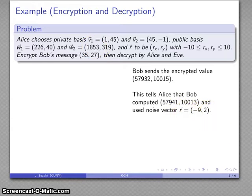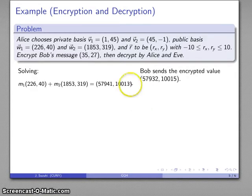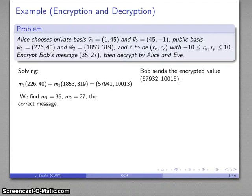So now I can solve the linear combination problem a second time by finding the linear combination that's equal to the vector that Bob actually computed. And that allows Alice to recover M equals 35, M2 equals 27, which is the correct original message.